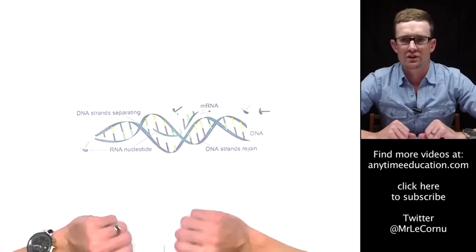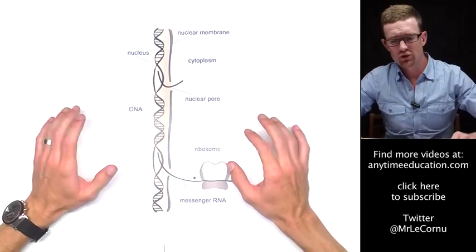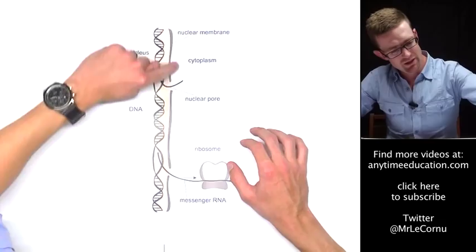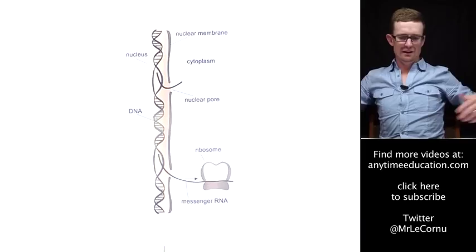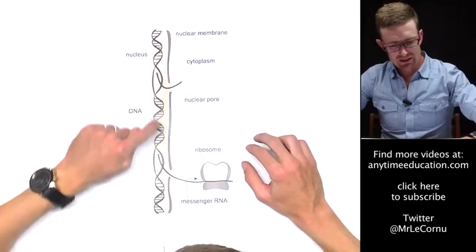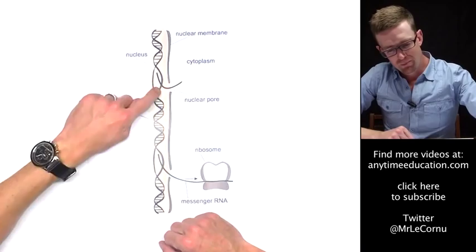This is a final diagram to help you understand transcription. This is the nuclear membrane here, so you've got to imagine the nucleus is here and the actual cell membrane would be way out here, so we're zoomed right in on our cell here.